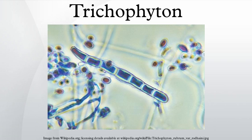Trichophyton fungi are molds characterized by the development of both smooth-walled macro and microconidia. Macroconidia are mostly borne laterally directly on the hyphae or on short pedestals, and are thin or thick-walled, clavate to fusiform, and range from 4 to 8 by 8 to 50 µm in size.